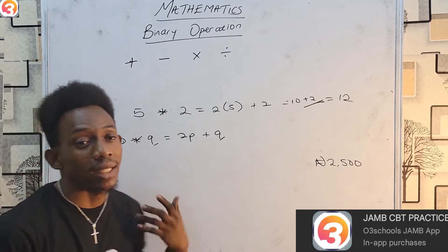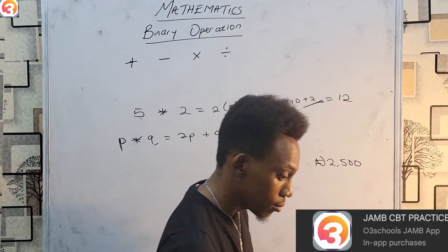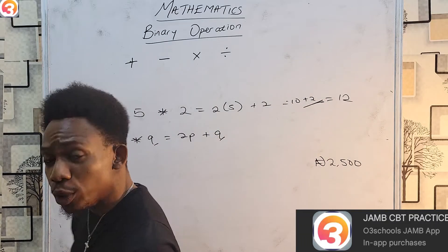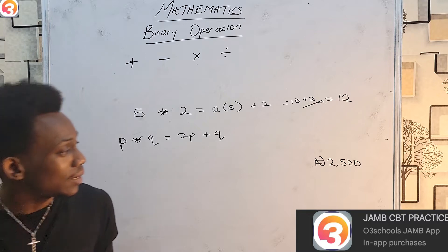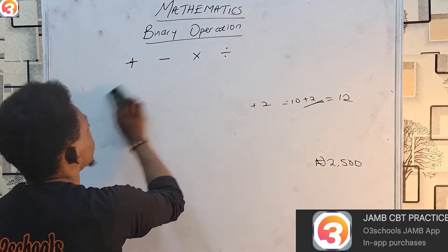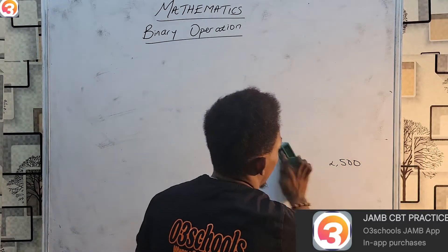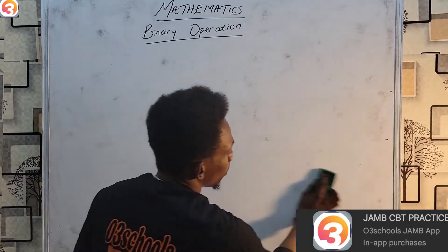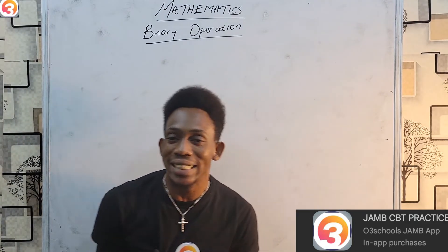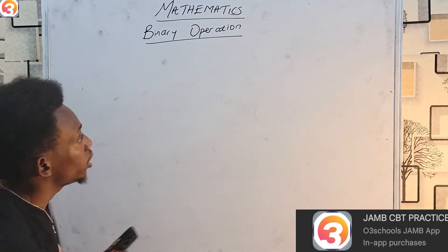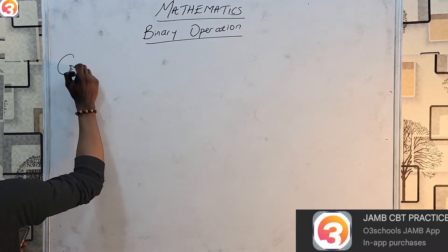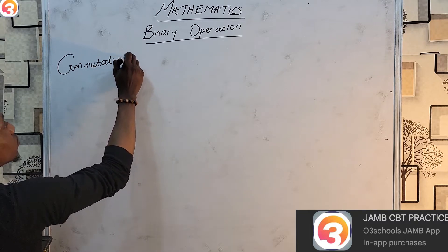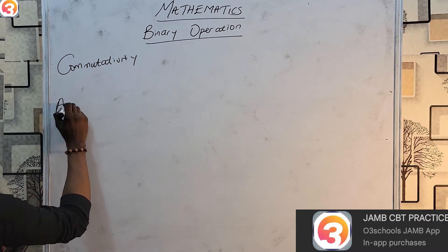Simply put your number where the letters are in the formula you are given and you shall get your answer. However, that is not all we do in binary operation — there are some special properties which we shall have to take a look at. Number one, a very important property is known as commutativity. There is also associativity.